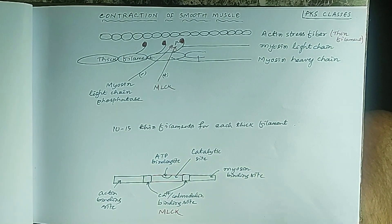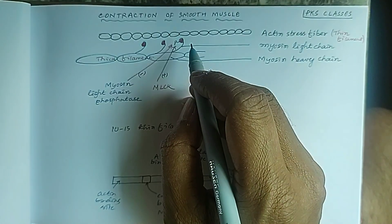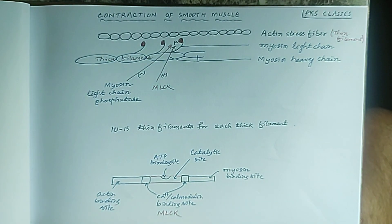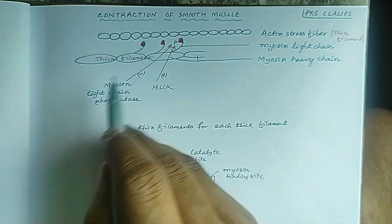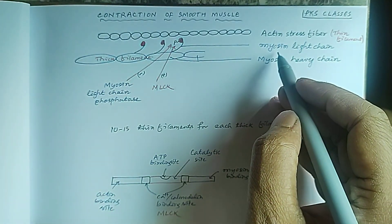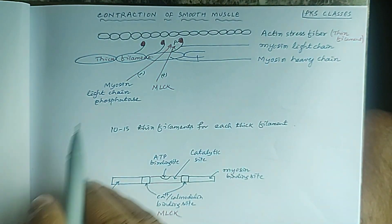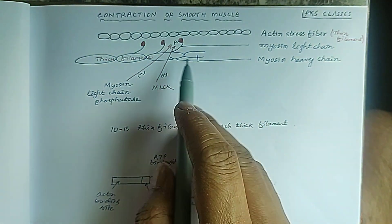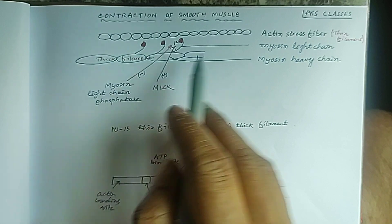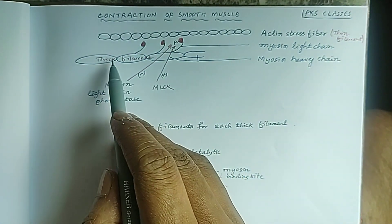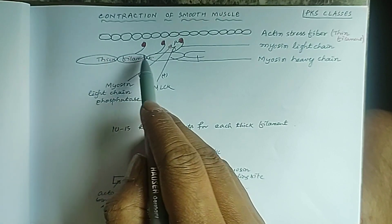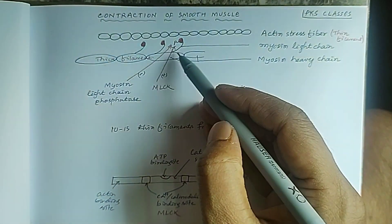Namaskar. Today we study the mechanism of contraction and relaxation of smooth muscles. In smooth muscle, two types of regulatory proteins are present: one is actin and the other is myosin. Myosin forms the thick filament and actin forms the thin filament. Myosin has a heavy chain and a light chain.